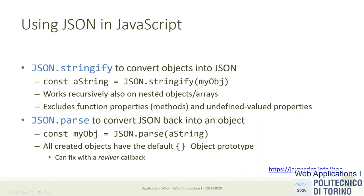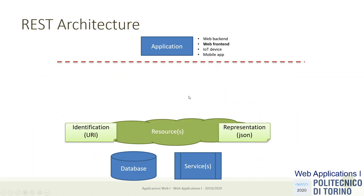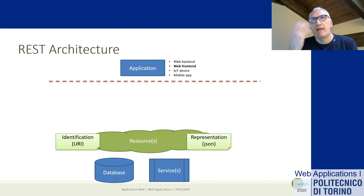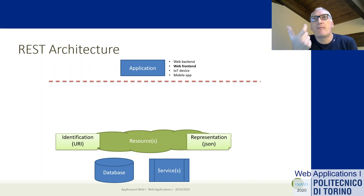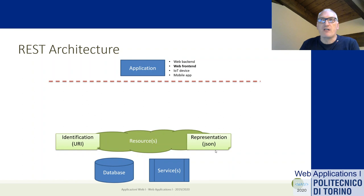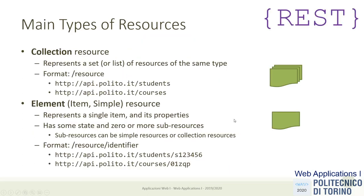Going back to the REST architecture: what we've done is take real server-side resources, abstract them into resources, and give each resource an identity and representation. The identity is just an address — we map abstract resources into specific web addresses. These web addresses will represent the resources on the server, and the content of the resource will always be represented in JSON as much as possible.